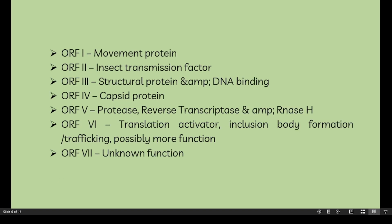Open reading frame 1 encodes a movement protein. Open reading frame 2 encodes aphid insect transmission factors. Open reading frame 3 encodes a virion-associated structural protein with DNA binding capabilities. ORF4 encodes the CAPC protein. ORF5 encodes a protease, bifunctional reverse transcriptase, and RNase H. ORF6 encodes a translation activator involved in inclusion body formation and trafficking, possibly with more functions. ORF7 is of unknown function.